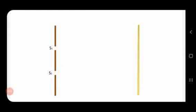We are going to consider a double slit experiment, which we may have done in optics. In the case of optics, light waves pass through the slits. Here, we send subatomic particles such as electrons through the slits. The experimental arrangement consists of two slits S1 and S2, with a screen on the right side.